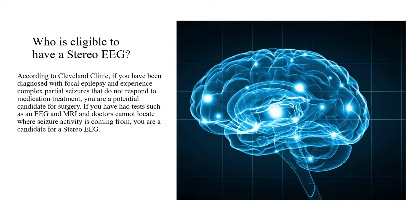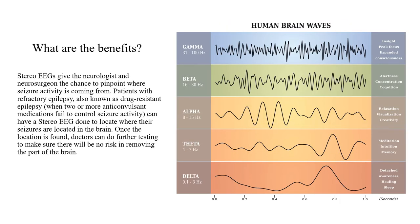According to Cleveland Clinic, if you have been diagnosed with focal epilepsy and experienced complex partial seizures that do not respond to medication treatment, you are a potential candidate for surgery. If you have had tests such as an EEG and an MRI, and doctors cannot locate where seizure activity is coming from, you are a candidate for a Stereo EEG. Stereo EEGs give the neurologist and neurosurgeon the chance to pinpoint where seizure activity is coming from. Patients with refractory epilepsy, also known as drug-resistant epilepsy, can have a Stereo EEG done to locate where their seizures are located in the brain.